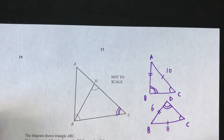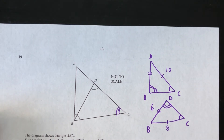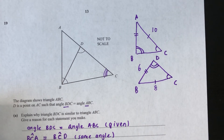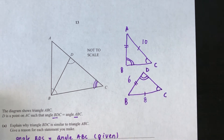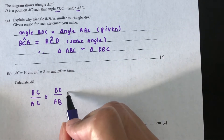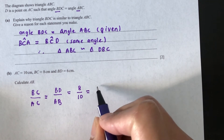Using the proportionality of corresponding sides: BC over AC equals BD over AB. Substituting the values: 8 over 10 equals 6 over AB.